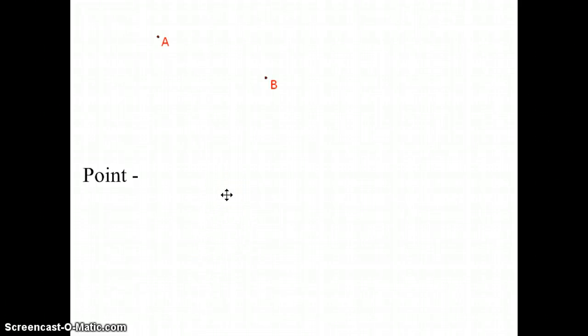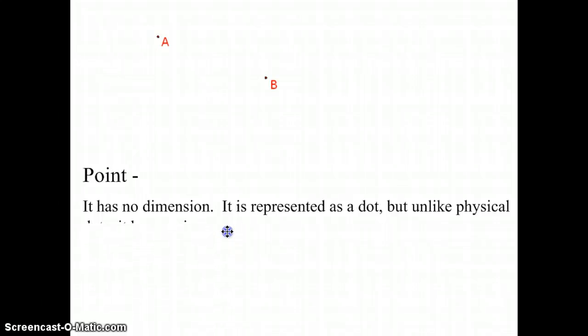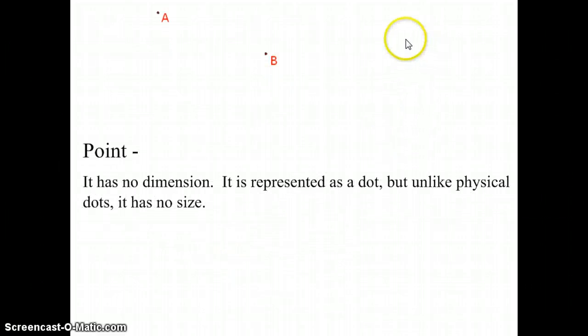Our first definition is a point. A point has no dimension. It's represented as a dot, but unlike physical dots, it has no size. The way we label a dot is either just A or B. That's all we would need to put. Please note, it has no dimension.